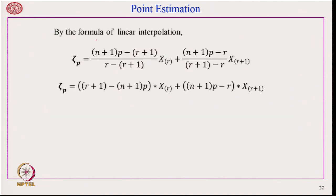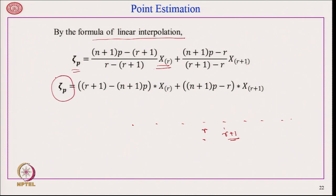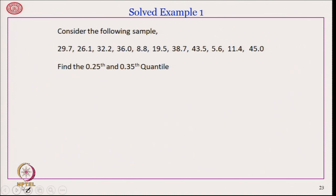Using linear interpolation, zeta_p is computed as: (n+1)p minus r plus 1, divided by r minus r+1, times x_r, where x_r is the r-th order statistic — the r-th smallest observation — and x_{r+1} is the (r+1)-th smallest. We interpolate between them to get the value of zeta_p, which lies somewhere between r/(n+1) and (r+1)/(n+1). Let me give you an example.